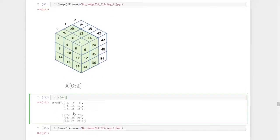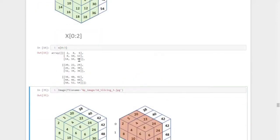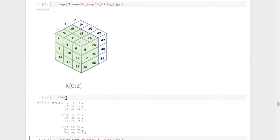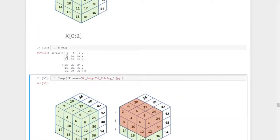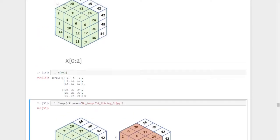Suppose I'm putting x of 3, then we will get all three layers. Or if I'm typing x up to 1, then I will get only the first layer. So suppose we need the first two layers, we give x of 2. So we got this zeroth layer and the first layer.